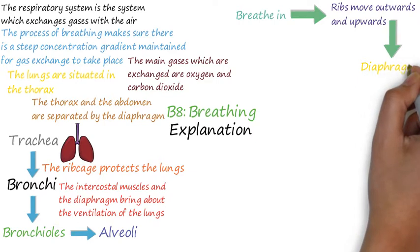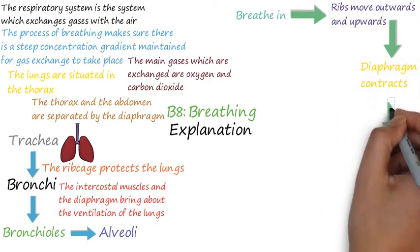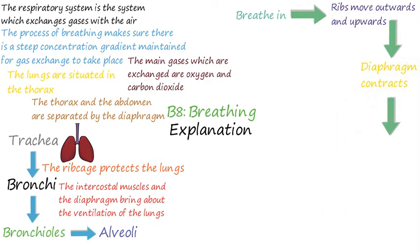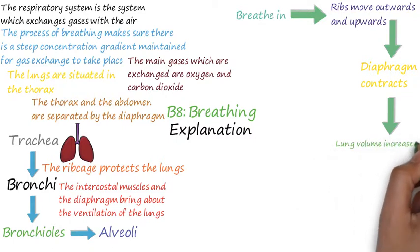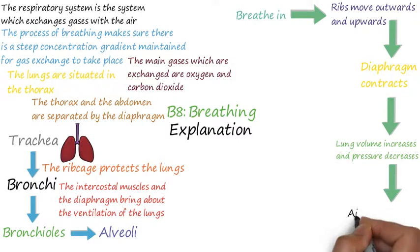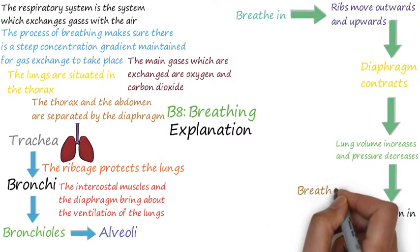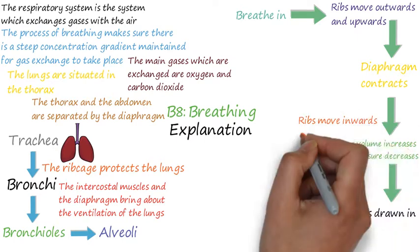When you breathe in, the ribs move outwards and upwards and the diaphragm flattens or contracts. This means that the lung volume increases and so the pressure in the lungs decreases. The atmospheric air is at a high pressure so air is drawn in.